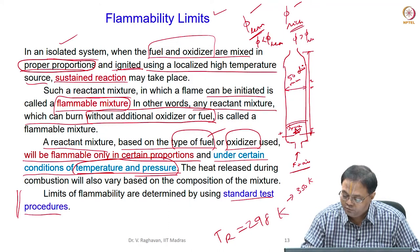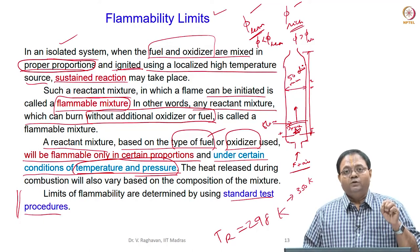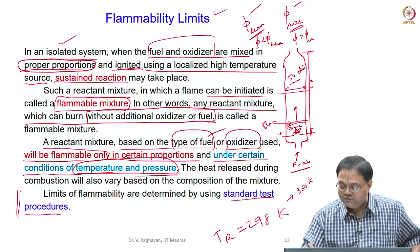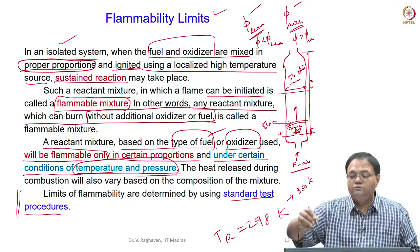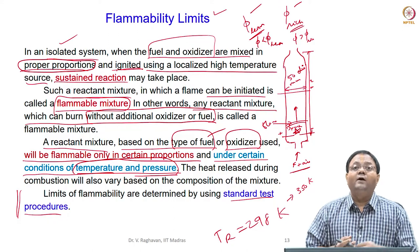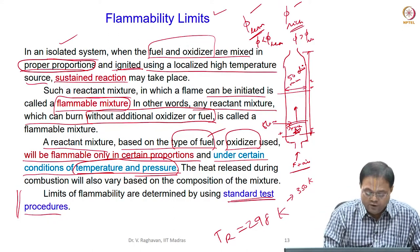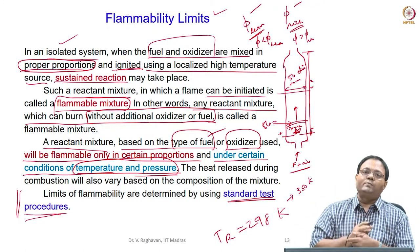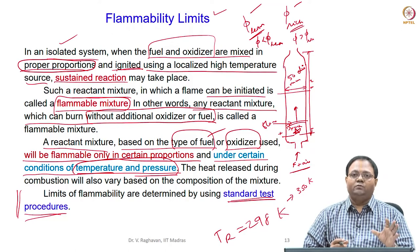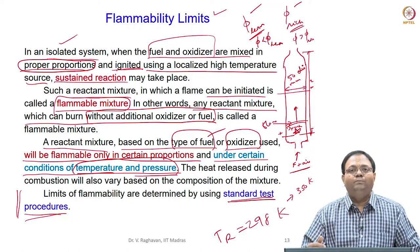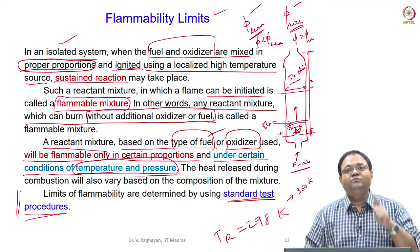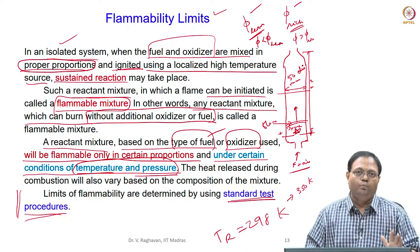Once you give a spark, a flame forms and propagates through the mixture. This standard test procedure calls for the flame to propagate at least half the distance — half the height — of the tube. Once ignited at the bottom, the flame should proceed to at least half the height of the column. If it does, the mixture is said to be flammable. The tube is typically about 2 meters long.